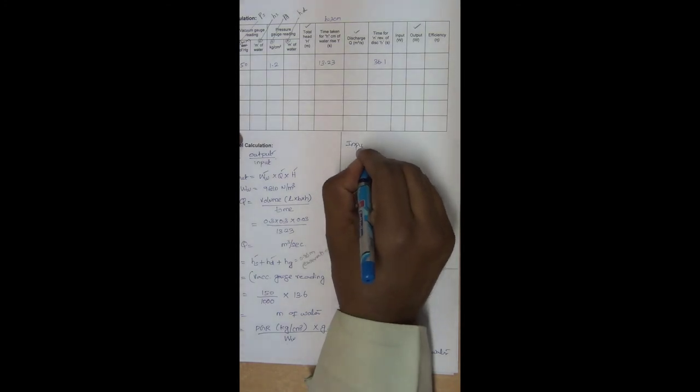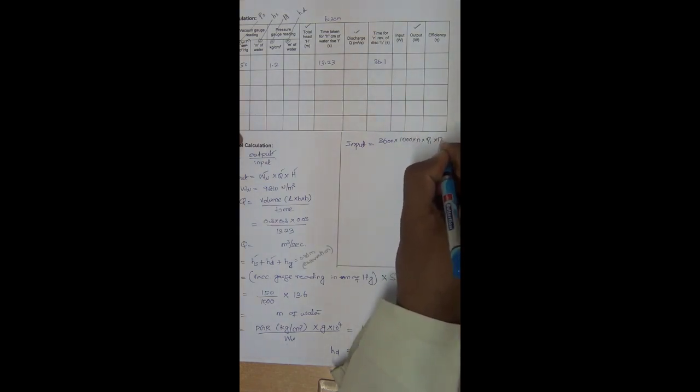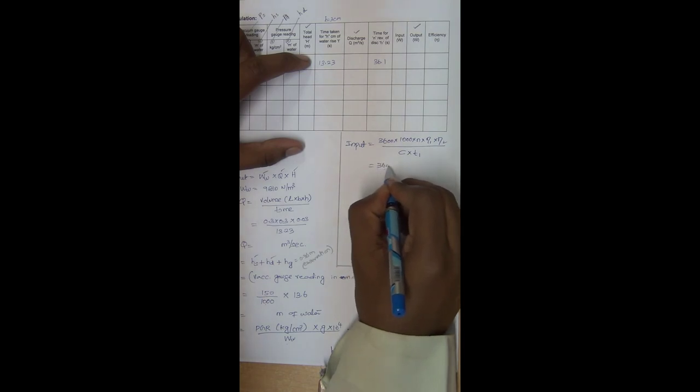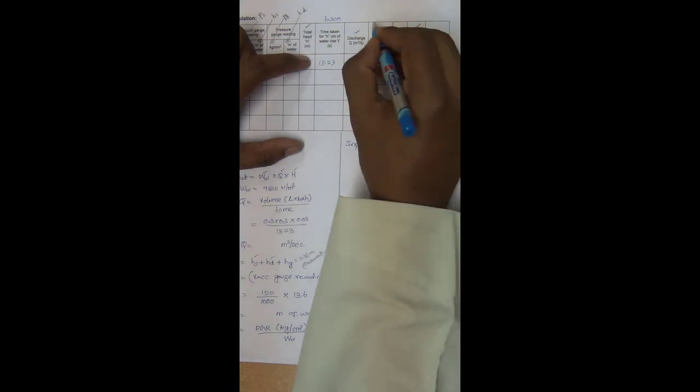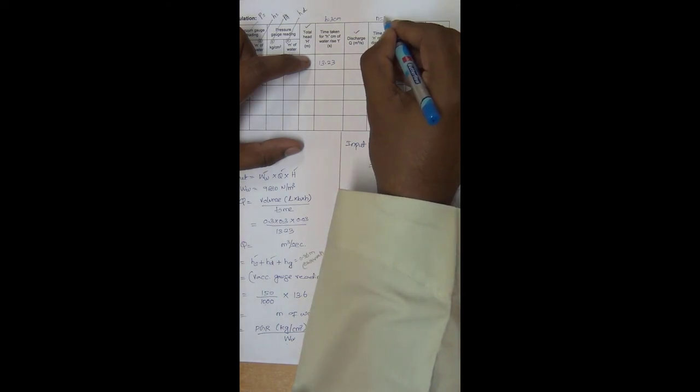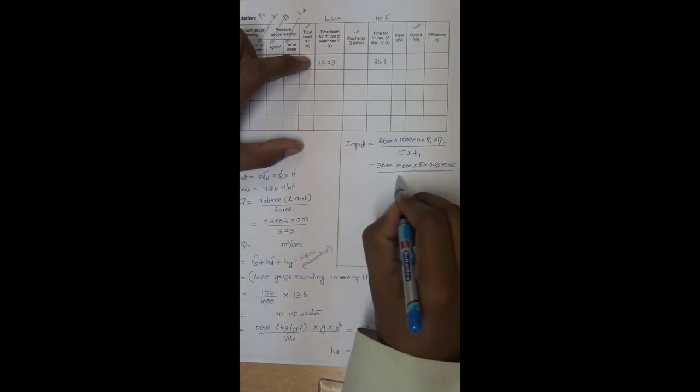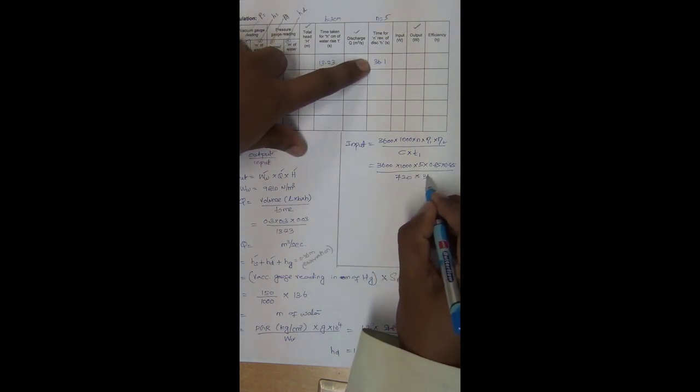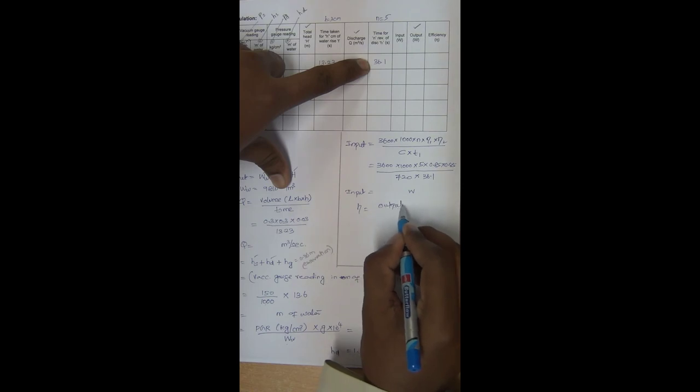To calculate input power, 3600 into 1000 into N into eta 1 into eta 2 divided by C into T1. So 3600 into 1000 into number of revolutions. Number of revolutions for reciprocating pump, let us assume it to be 5, into 0.85 divided by C is 720 into T1 is 36.1. We will get input power. Efficiency equal to output by input. We will get in terms of percentage efficiency.